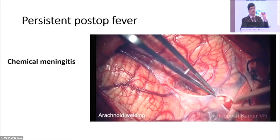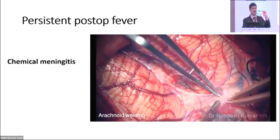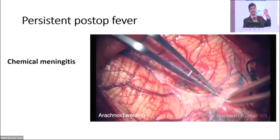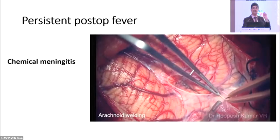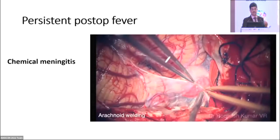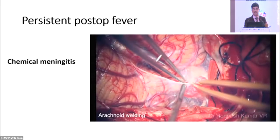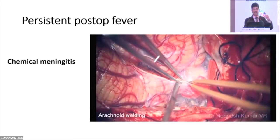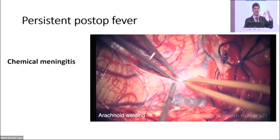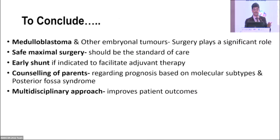Post-op fever especially after posterior fossa surgery for medulloblastoma is the second important point — it delays adjuvant chemotherapy. In our center we perform meticulous arachnoid closure. The arachnoid is like a paper film — it cannot be sutured. The technique is to use small intermittent bipolar current to coagulate and seal the arachnoid. This meticulous closure has significantly reduced post-operative fever. Blood in the fourth ventricle and subarachnoid spaces causes this non-infective post-operative fever, delaying chemotherapy.